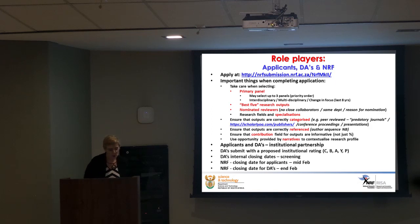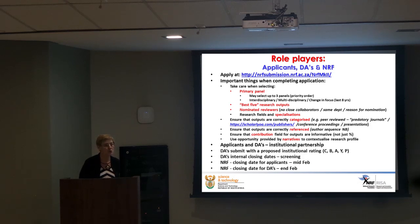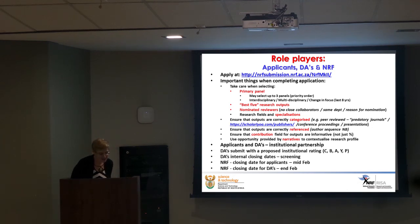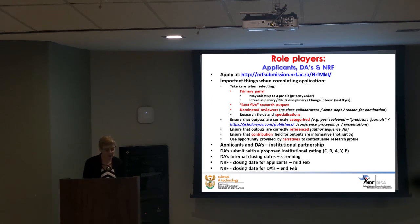Applicants and designated authorities should be in institutional partnership. Your first point of call when starting an application should be your research office — ask what support they give, their internal screening deadlines. They are your best friends in this endeavor. The DAs submit with a proposed institutional rating. The closing date for applicants is mid-February every year; designated authorities then have two weeks to do final tweaking before they submit.